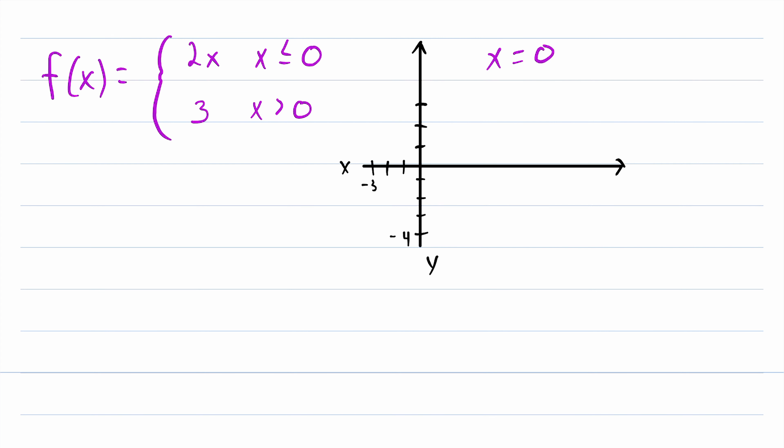When x equals 0, we know that 2x is also equal to 0. So we'll have a point right at the origin. Let's have x equals negative 2 for our next point. This still falls under this rule because negative 2 is less than or equal to 0. So f of negative 2 is going to be 2 times negative 2, which is negative 4.